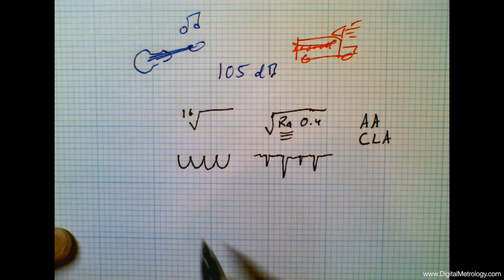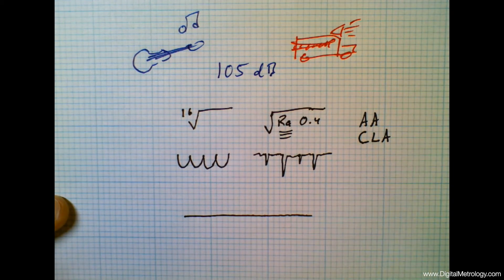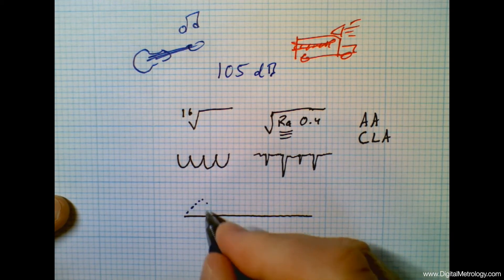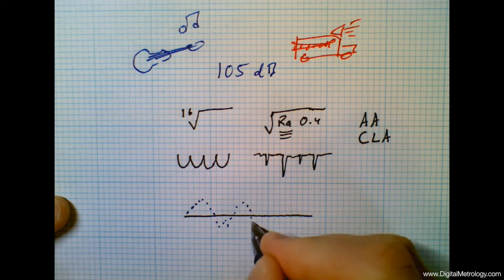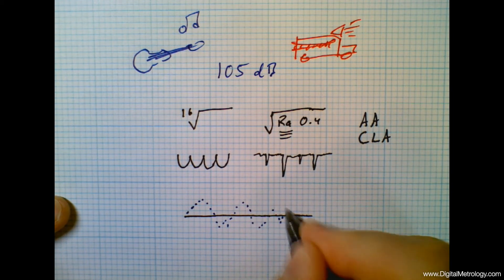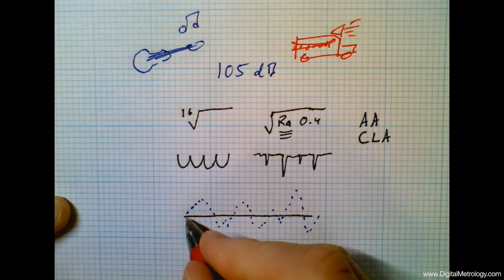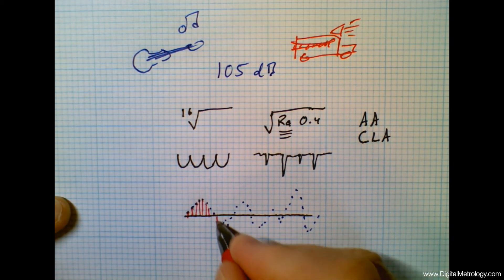And the actual calculation of RA isn't super descriptive and it isn't super hard to think about. If we measure a surface we're measuring it with data points along the way. So our measured data points might look something like this. And the RA calculation is simply the average distance from the mean line for each of those data points.